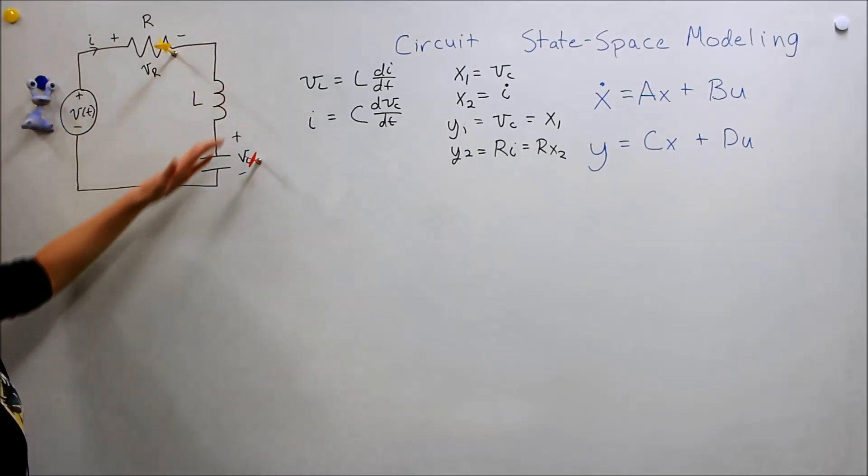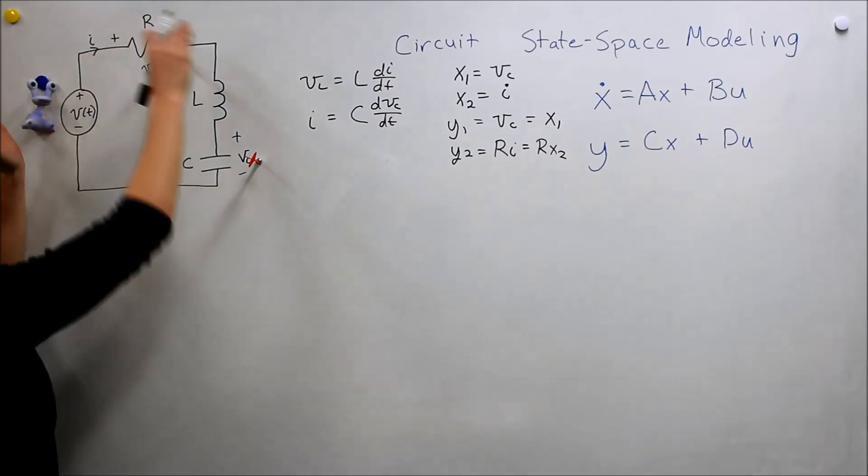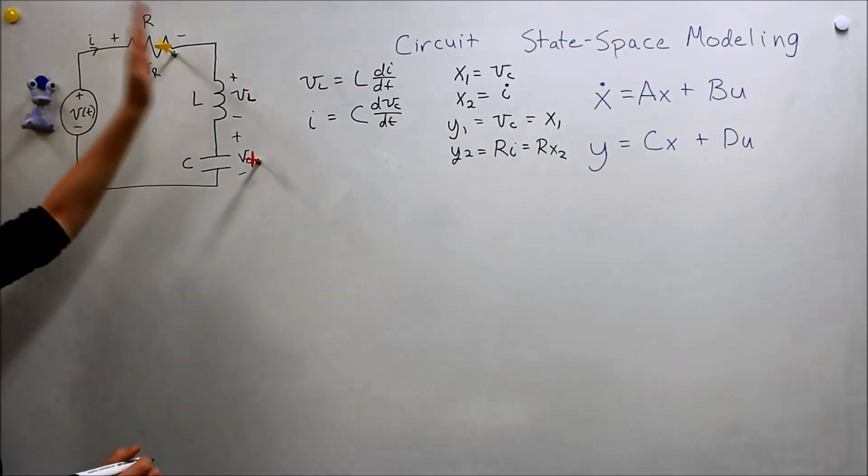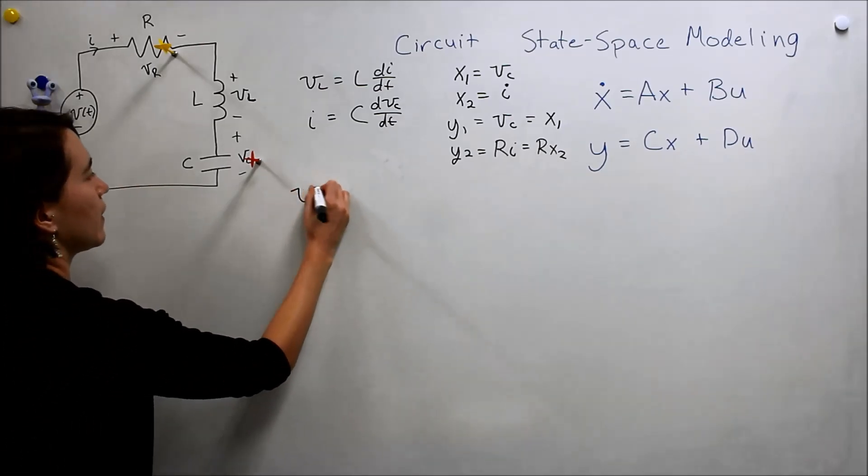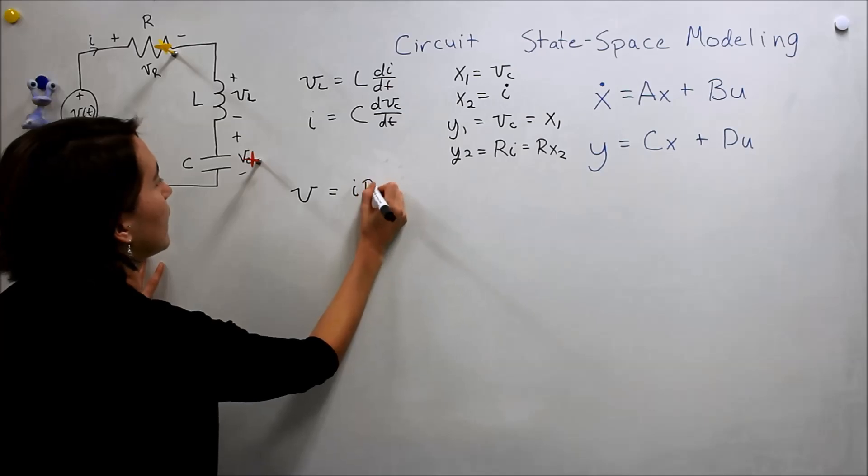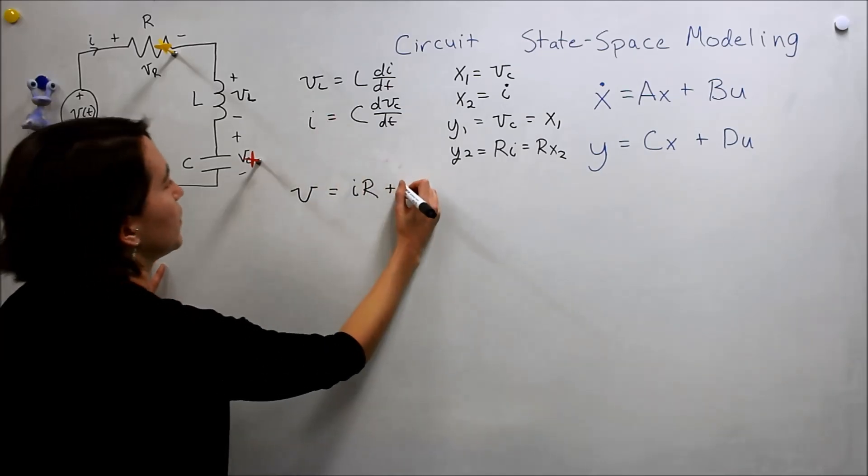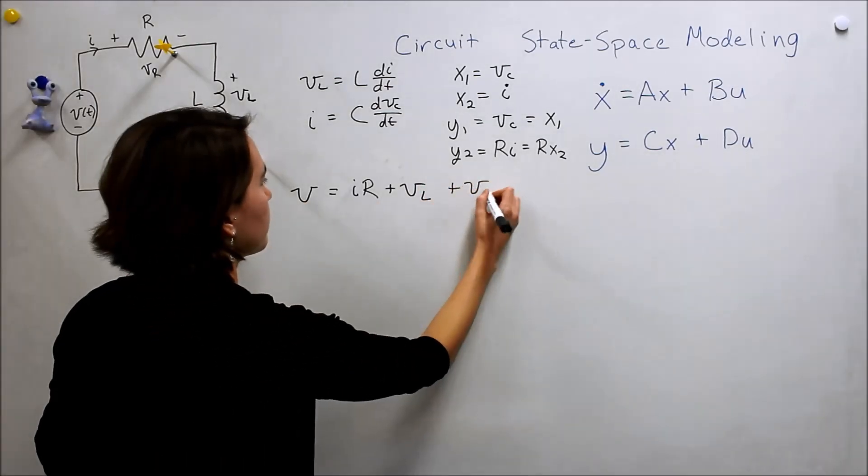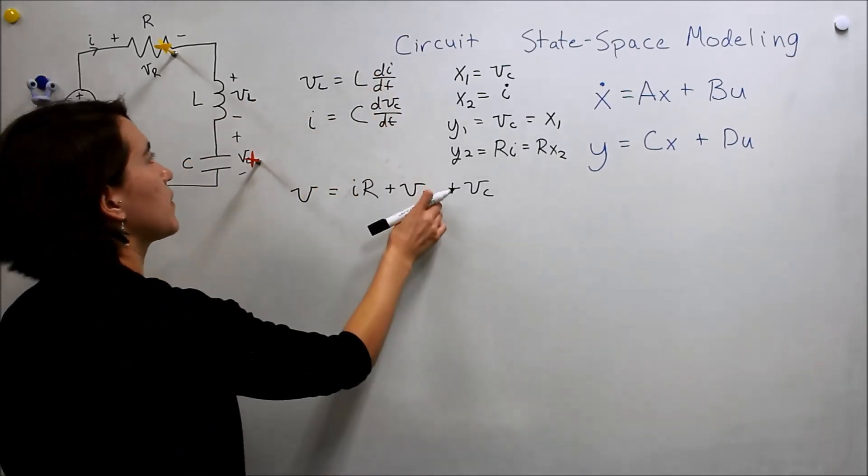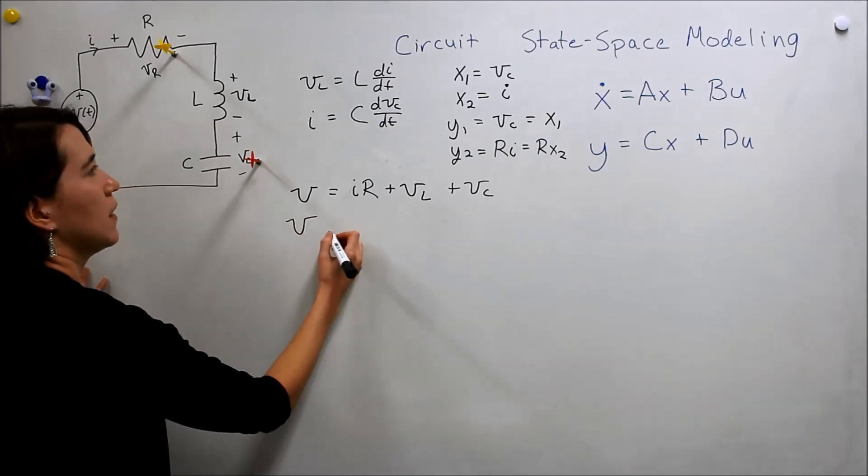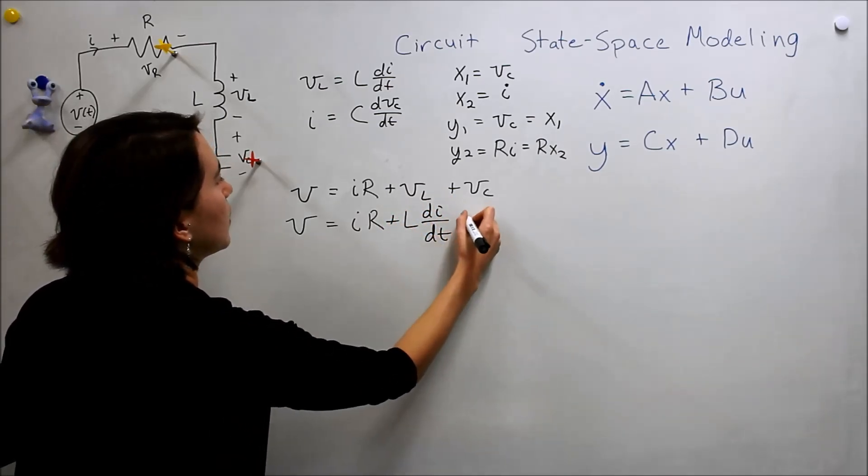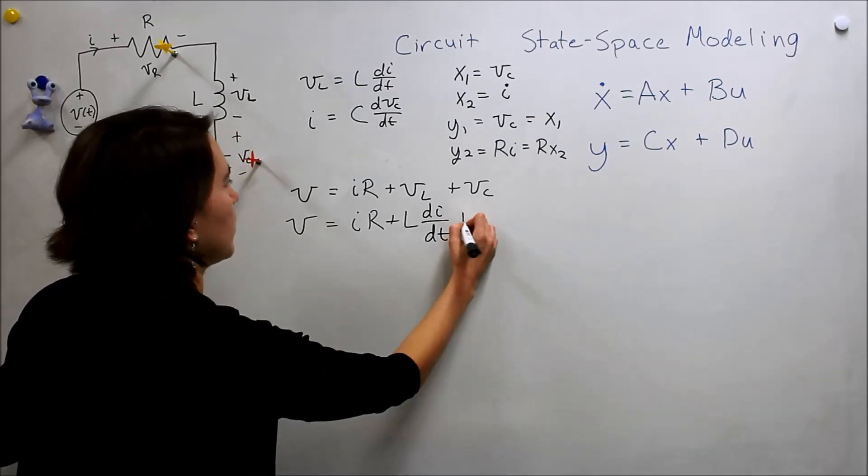But if we look at the summing up all of these voltages, if you do KVL, we know that this voltage has to be equal to the sum of these voltages, so let's write that down. We have V input is equal to IR plus VL and then plus VC. So if we put these together, we can actually get rid of our VL, so let's substitute this into here. We'll get V equals IR plus L dI/dt plus VC.